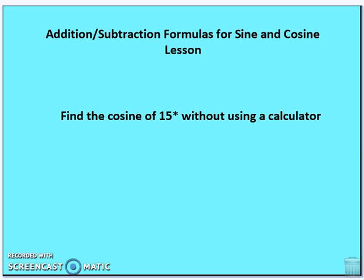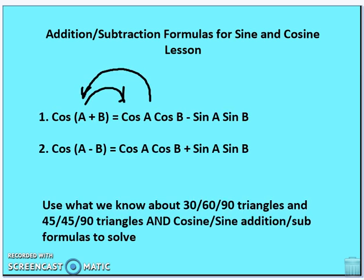Cosine of 15 degrees is an example of this. I'm going to give you the formula for the sum and difference formulas for cosine, go through some exercises, and then do the same for sine. The cosine sum formula: cosine(A + B) = cosine A · cosine B − sine A · sine B.